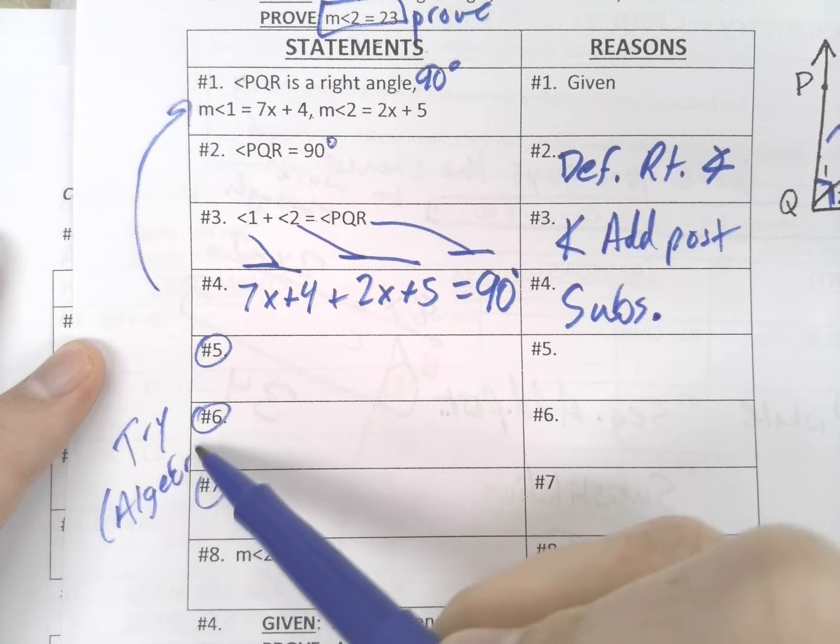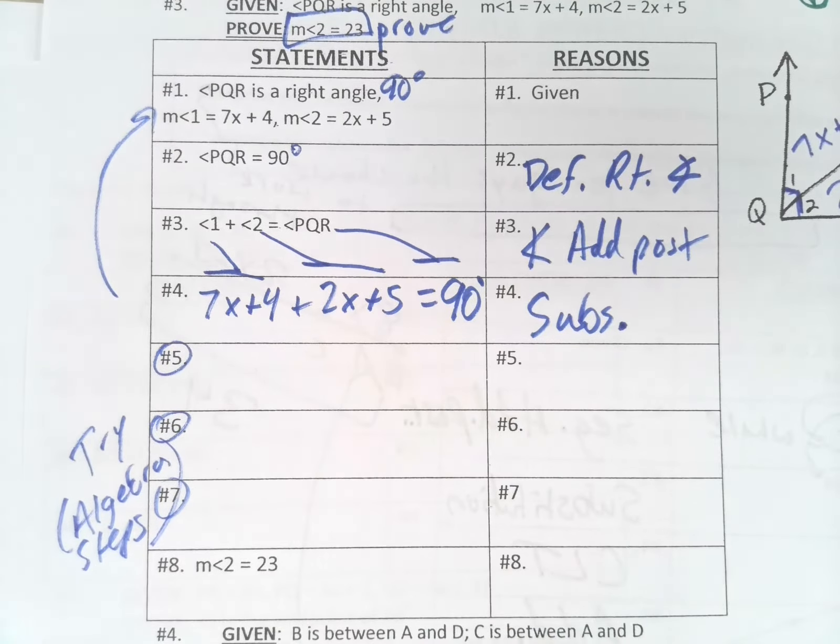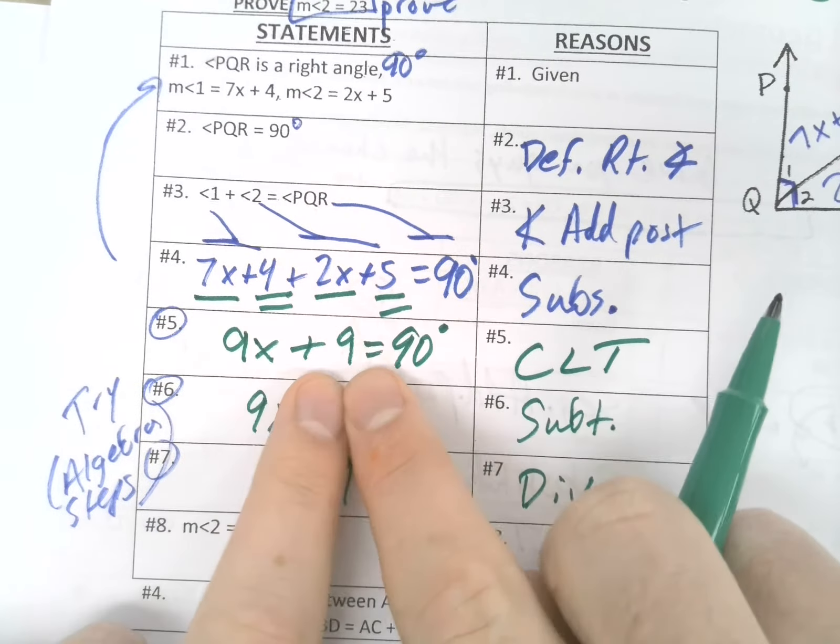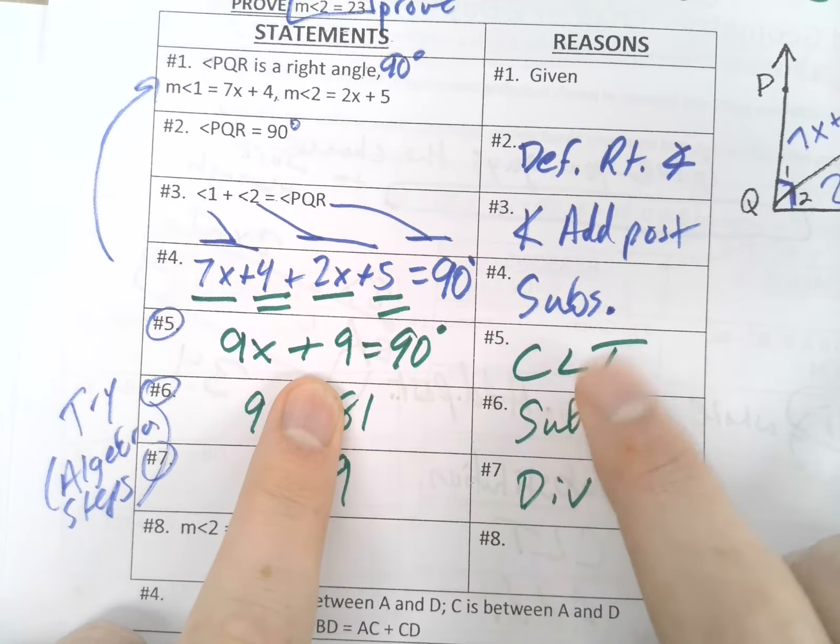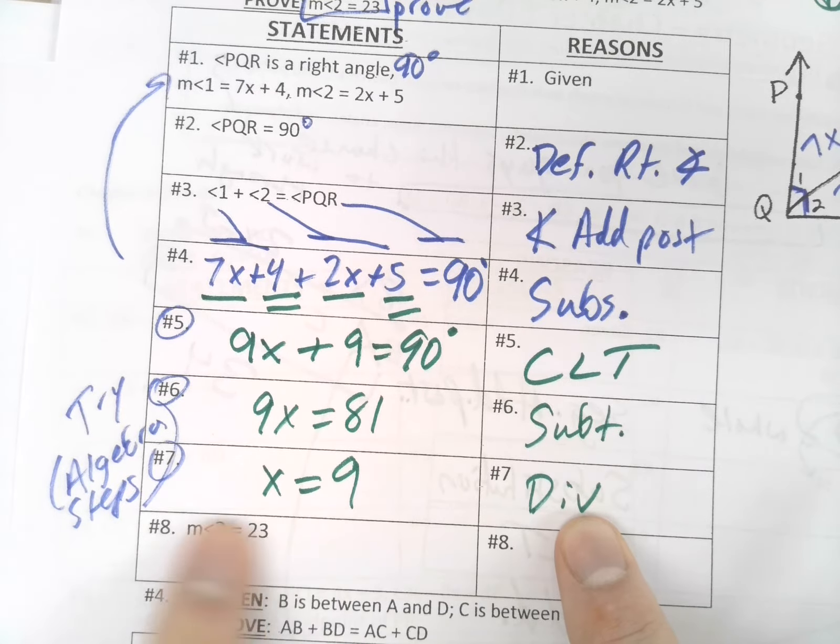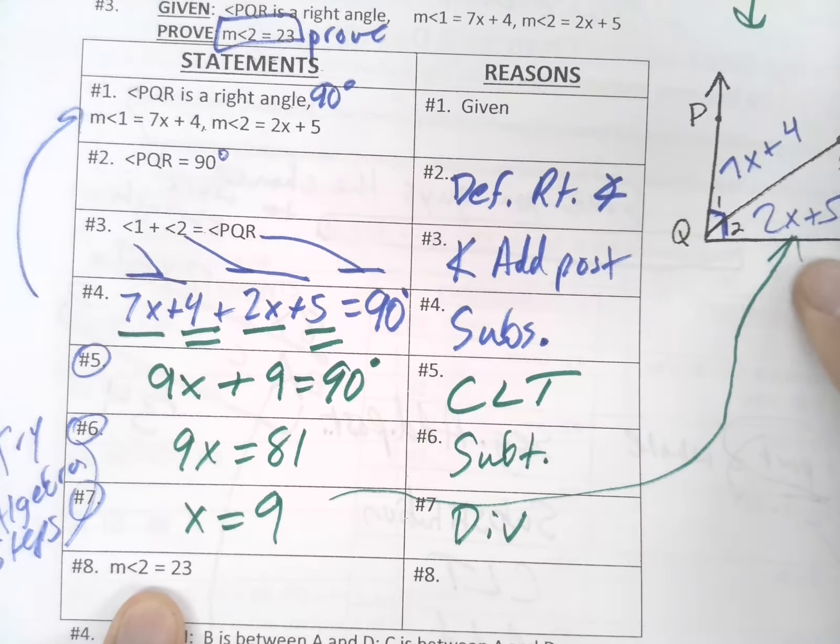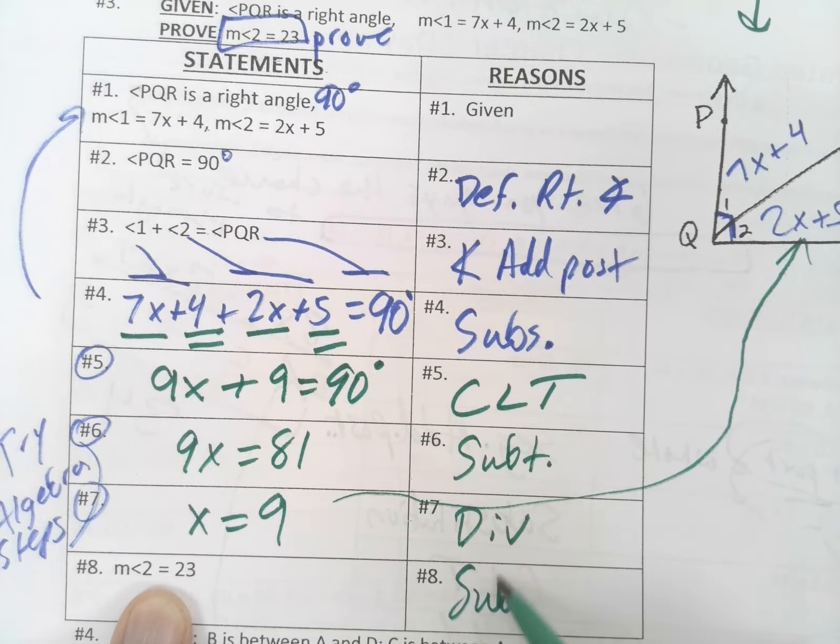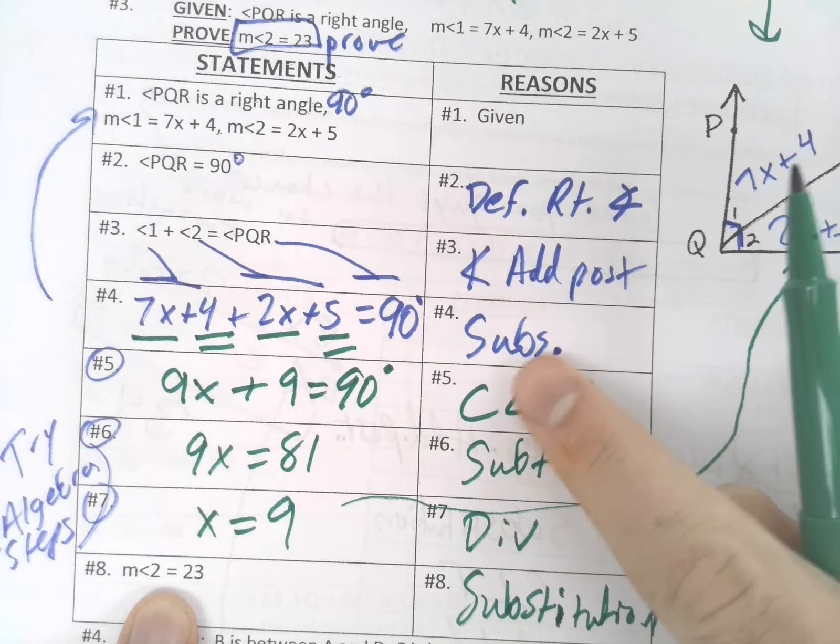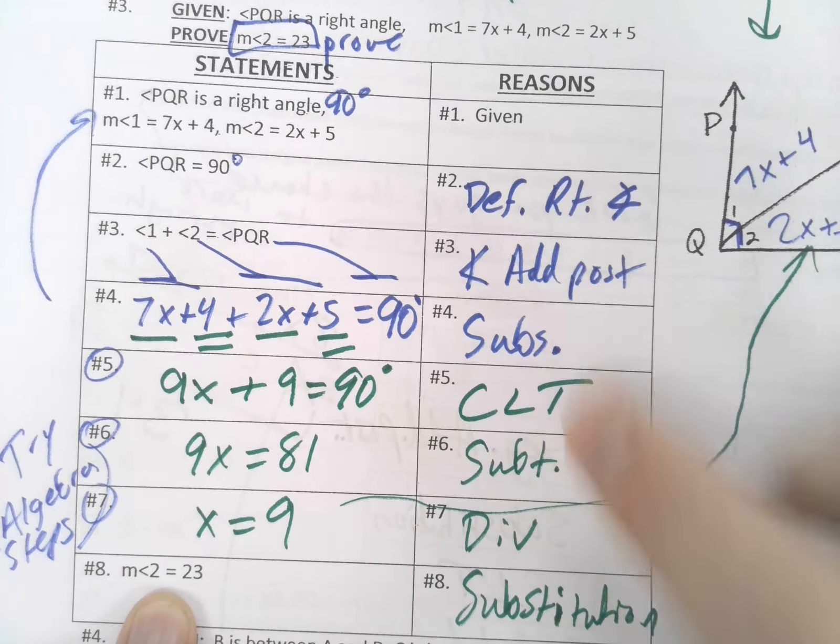By using substitution. And I'm going to let you guys see if you can take it from here. These are all algebra steps. We combine 7x and 2x to get 9x, 5 and 4 to get 9, using combining like terms. Subtract 9 over and then divide, and you end up with x equals 9. Then you take that 9, plug it in there, and that's substitution.